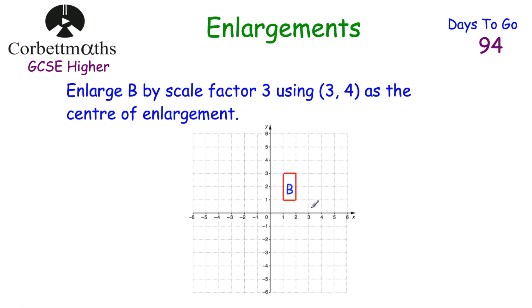To enlarge shape B using scale factor 3 with centre of enlargement (3, 4), first plot the centre of enlargement. All points of B are going to become 3 times as far away from the centre of enlargement. Starting with the first point: to get from the centre to this point we go 1 square left and 1 square down. Multiplying by 3, we go 3 left and 3 down — so it moves to there.